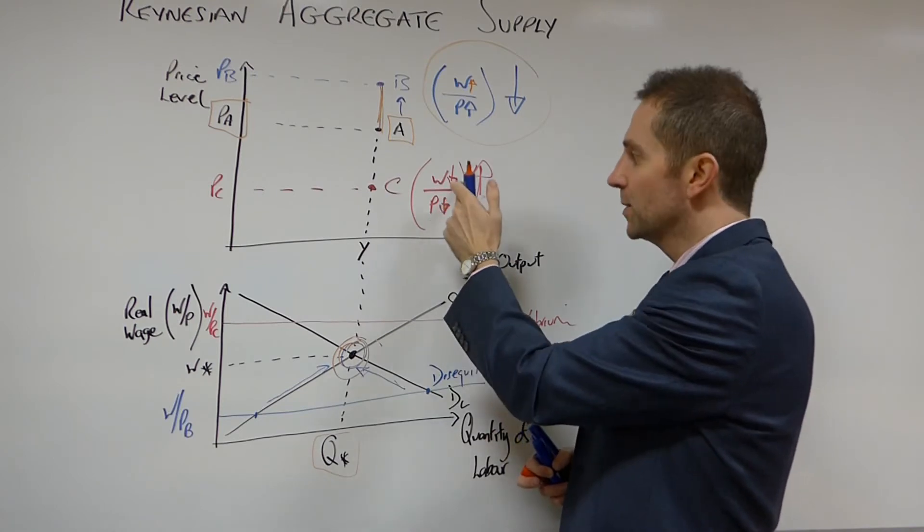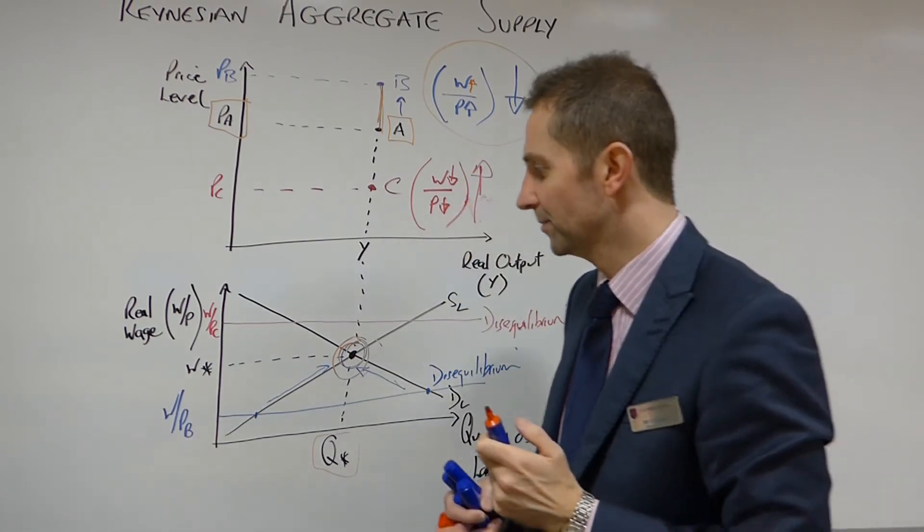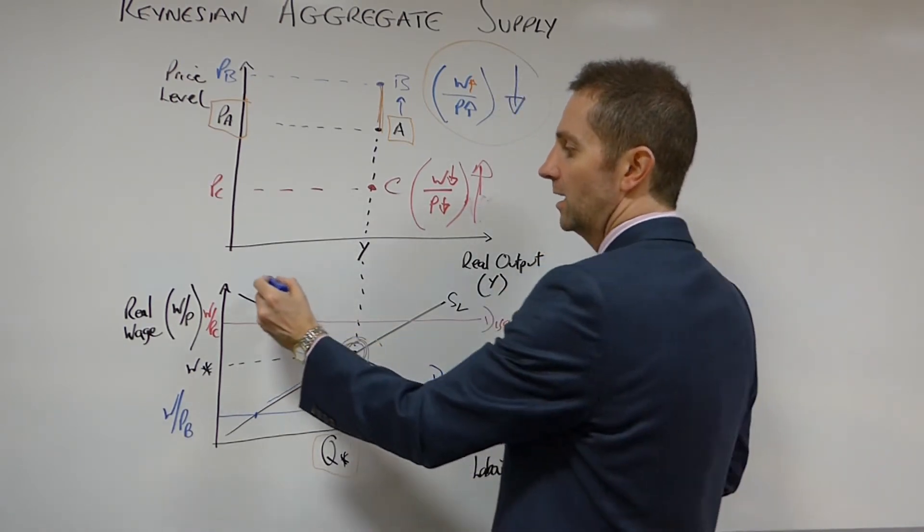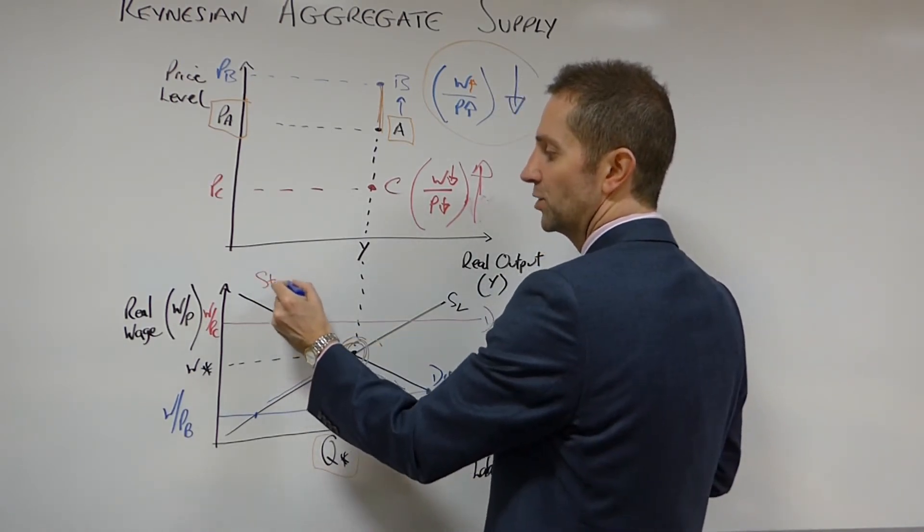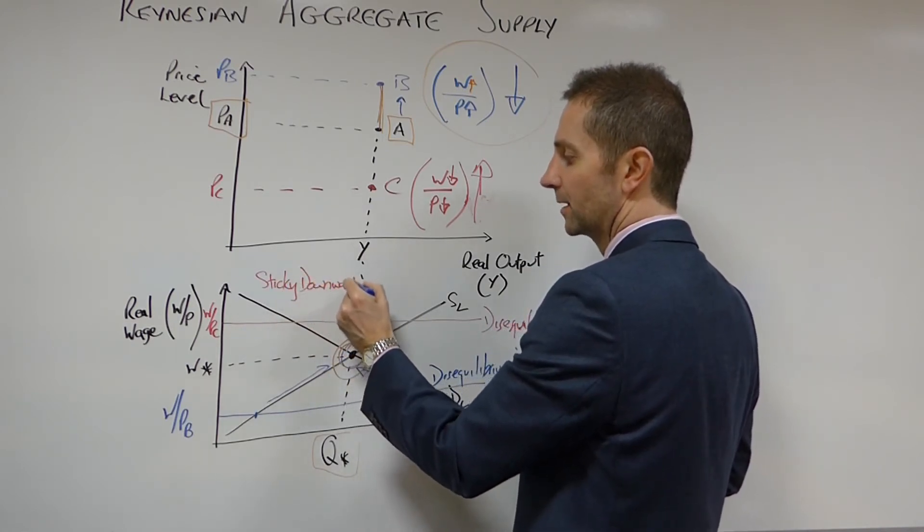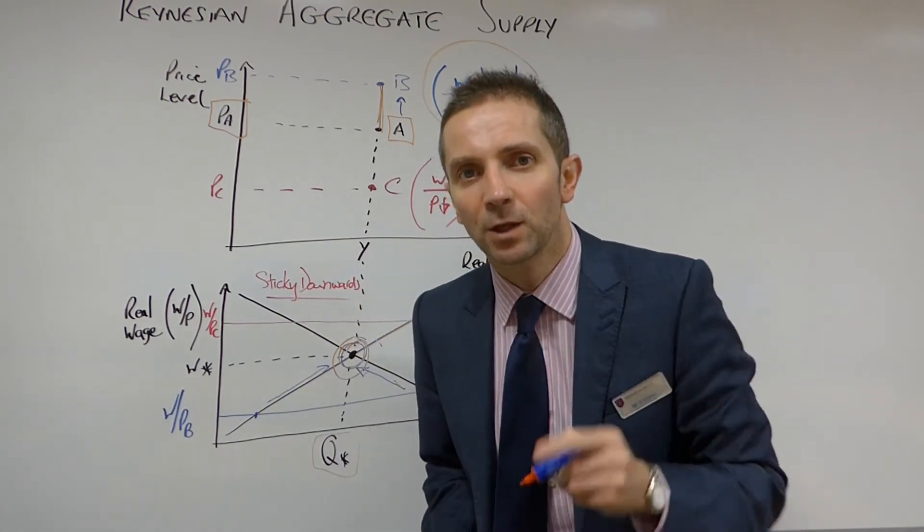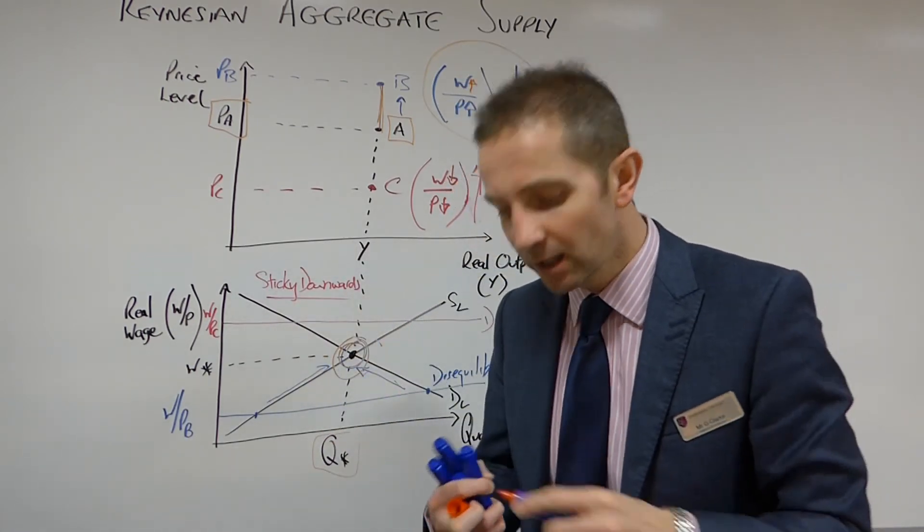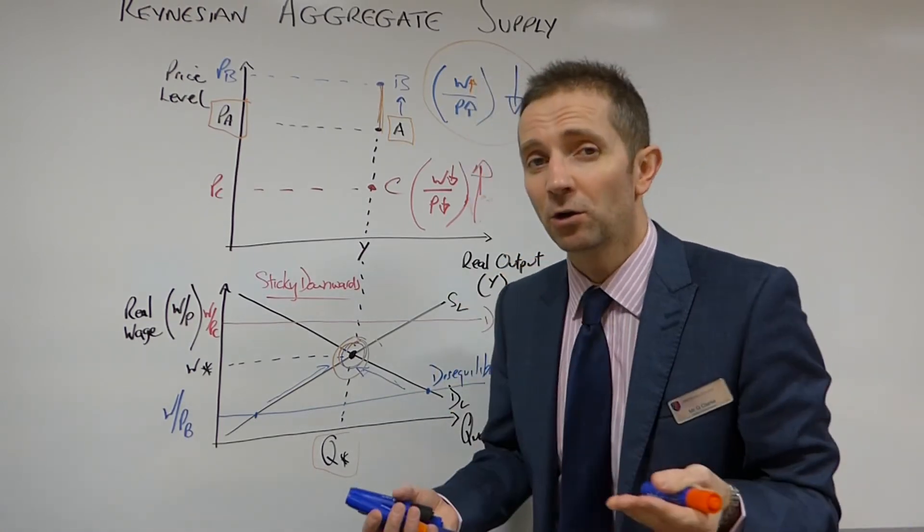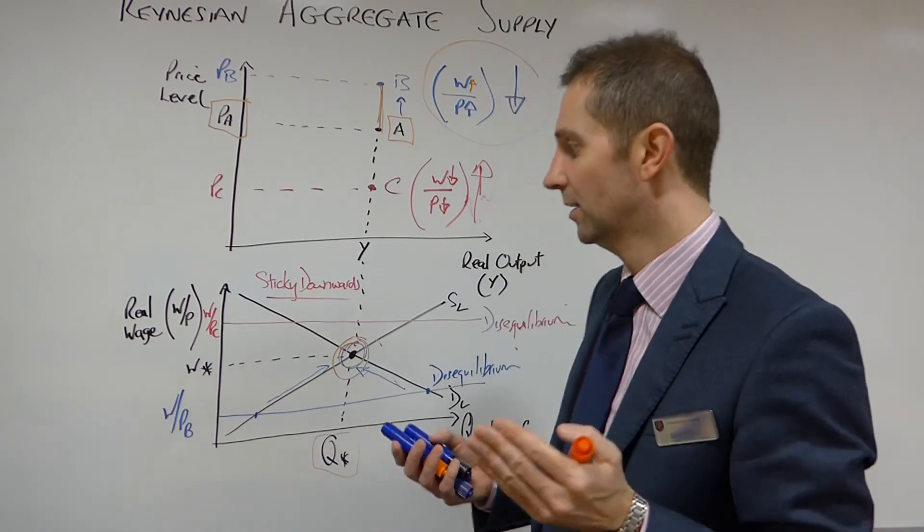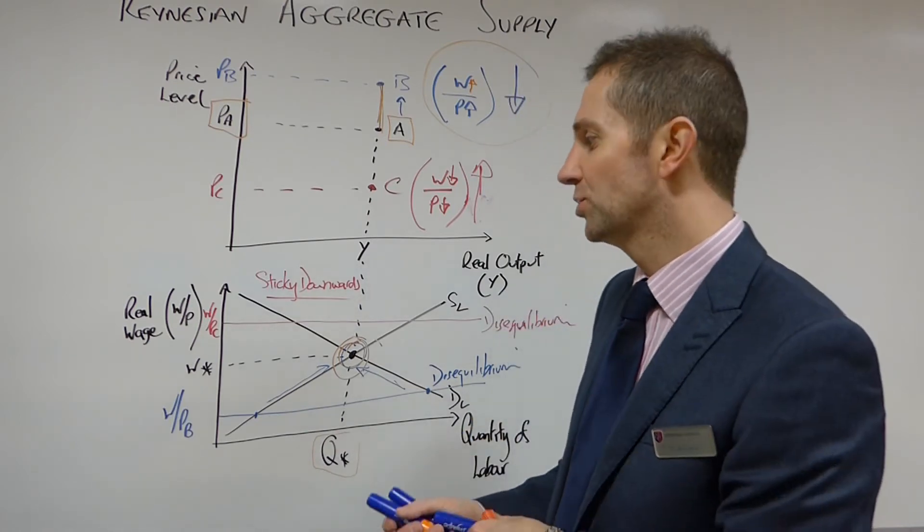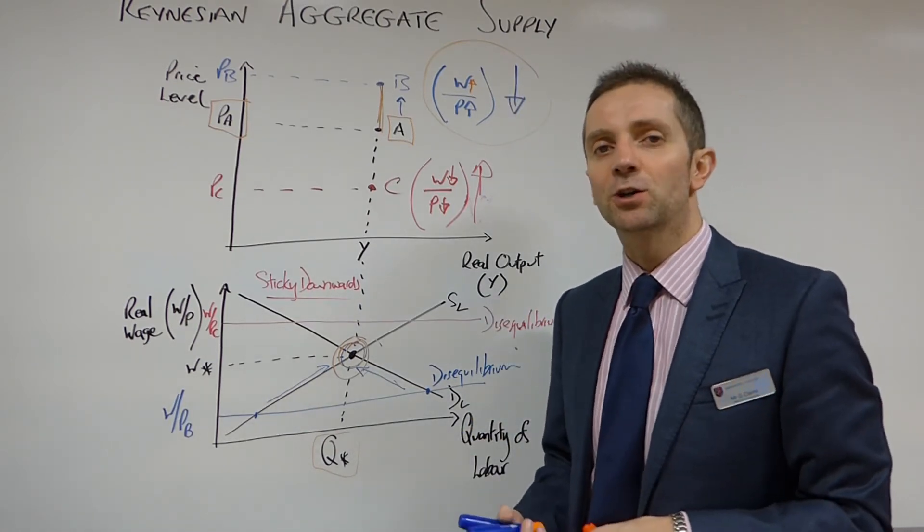But Keynesians, I'm sure you've heard this term before, Keynesians argue that wages are sticky in a downwards direction. Now, what does that mean? It simply means that individuals, and it's rational, isn't it? Rational individuals, we're all very happy to take a pay rise, but don't ask me to take a pay cut please. I don't want to take a pay cut. So wages are sticky in a downwards direction.